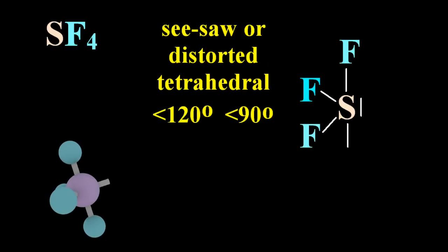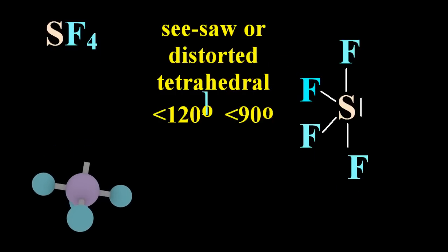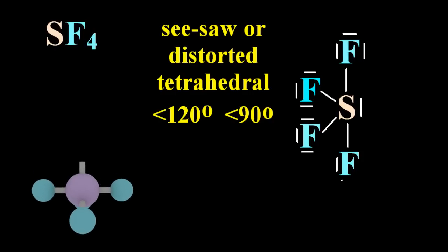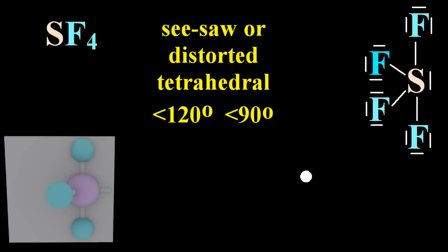Sulfur can be stable with eight, ten, or twelve electrons around it. In this case, there's a lone pair on the sulfur, and that gives the distinctive shape, and the reduction of bond angle.